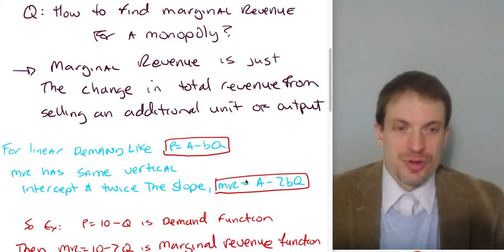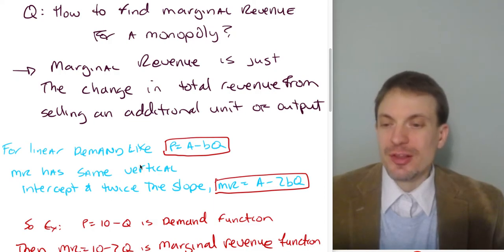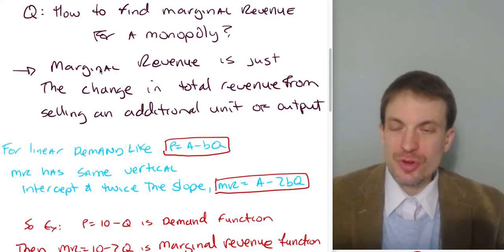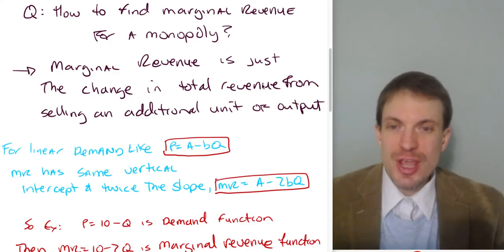I'll show that and I'll show kind of the shortcut to calculating the marginal revenue curve. And I'll show the calculus version as well. So marginal revenue, that's just the change in total revenue from selling one additional unit of output.